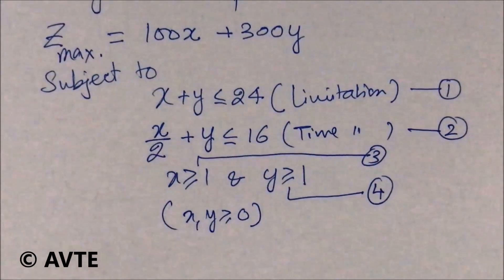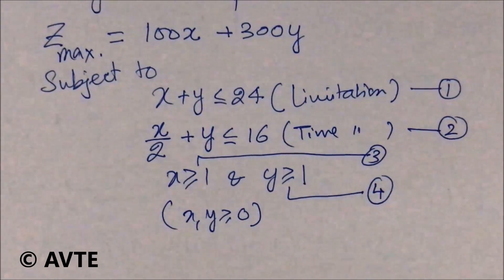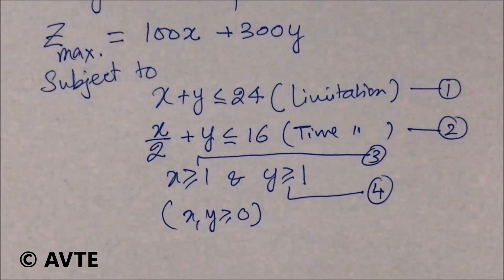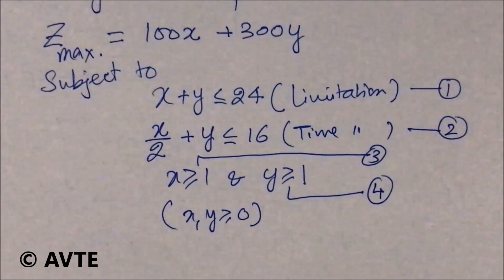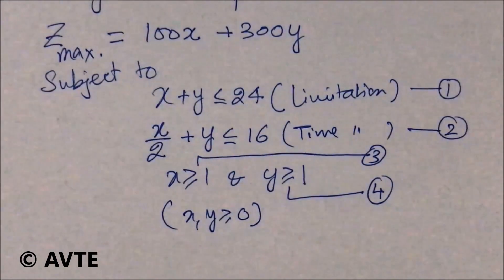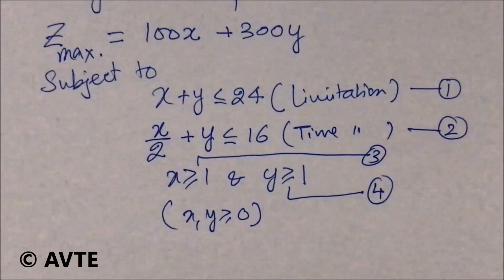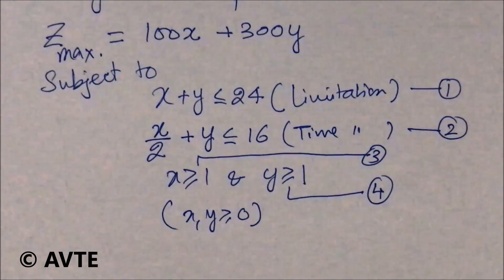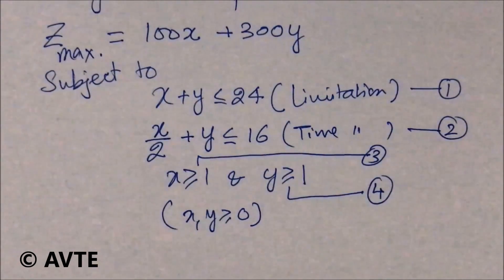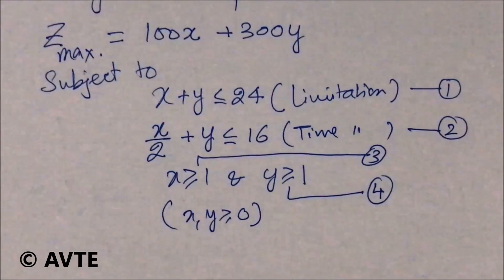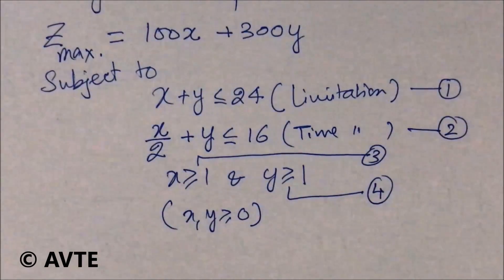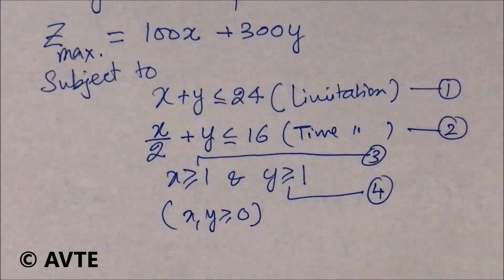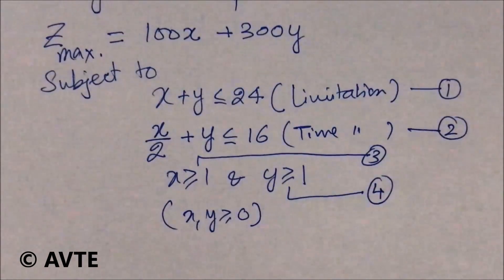This is the complete structure of the LPP. You only need to formulate because the language says 'formulate an LPP for finding how many of each can be produced' — they are not asking us to find the actual values of X and Y. So there is no need to solve for X and Y; you can only formulate and leave it.